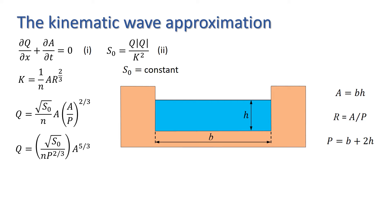Rearranging this to get an expression for A in terms of Q, we have A equals α Q to the β, where α equals nP to the two thirds over root S₀ to the power of β, and β equals three fifths, or 0.6.